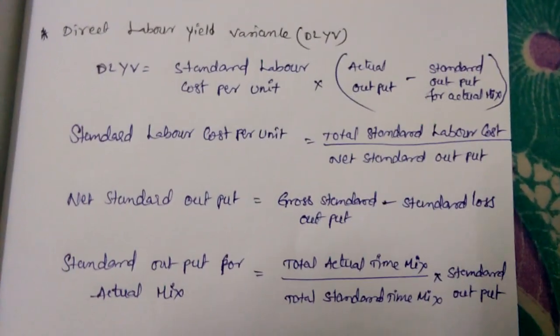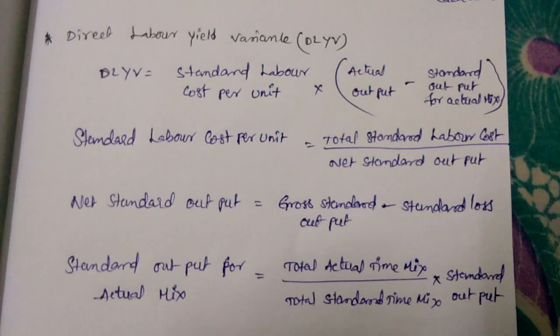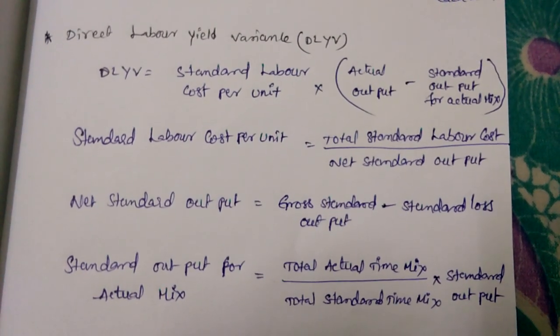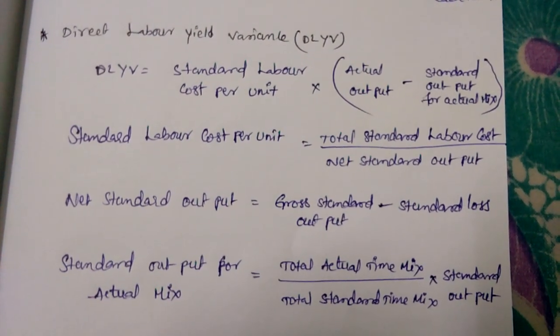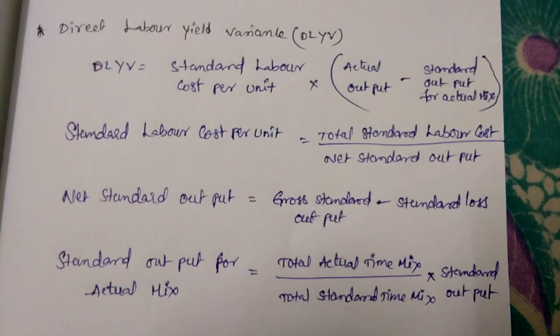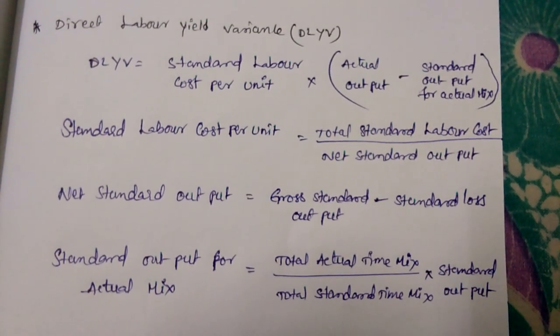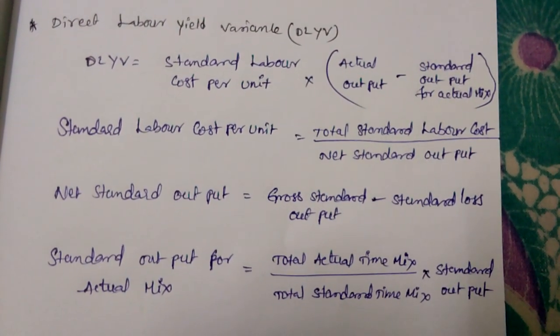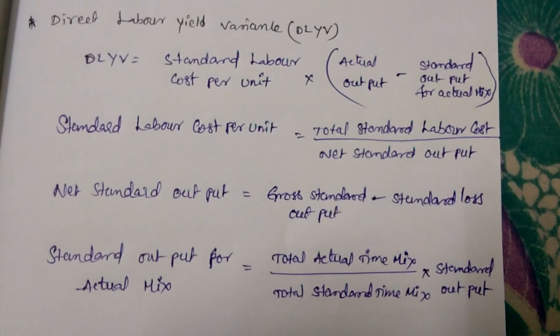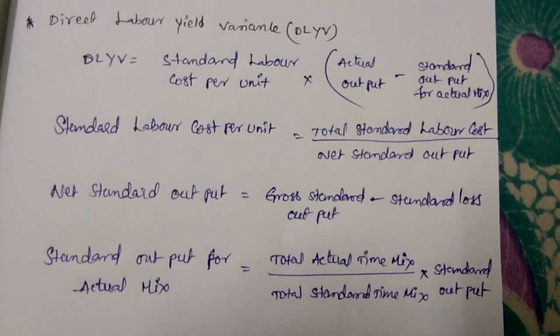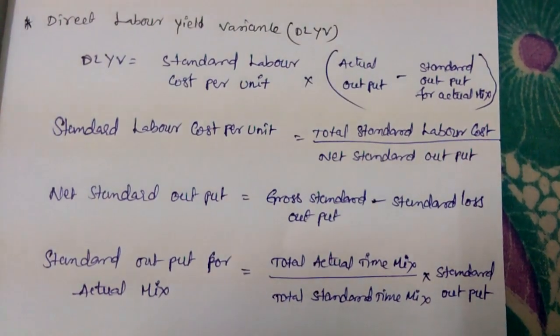Next is direct labor yield variance, DLYV. DLYV equals standard labor cost per unit into actual output minus standard output for actual mix.